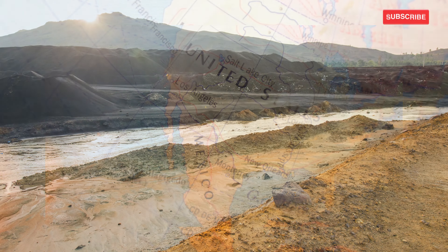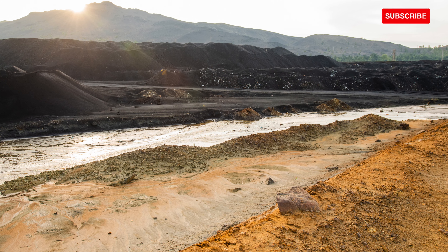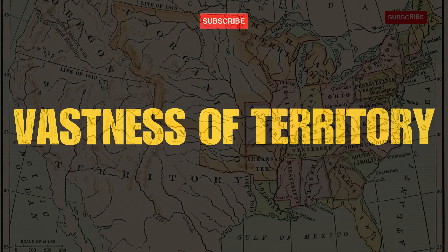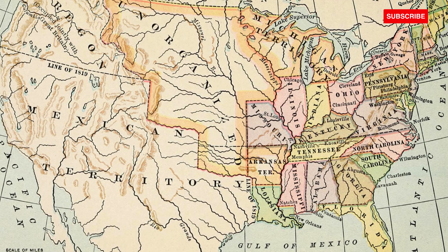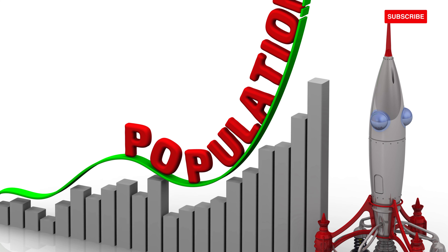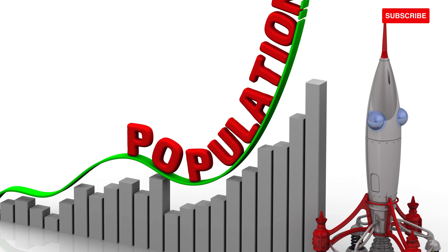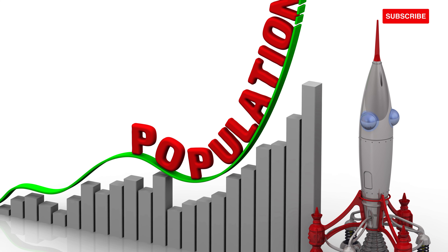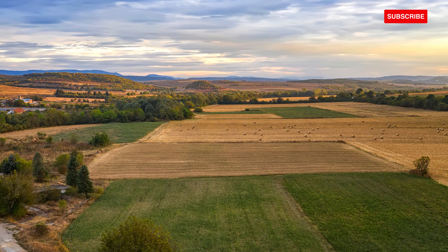The geography of the United States has been a major factor in its development. The climate, natural resources, and vast territory have all contributed to its rapid progress. The vast American territory absorbed a growing population — starting with just 104 settlers in 1607, the population soared to 10 million by 1900 and 180 million by 1960. This vast land allowed for rapid settlement and growth.